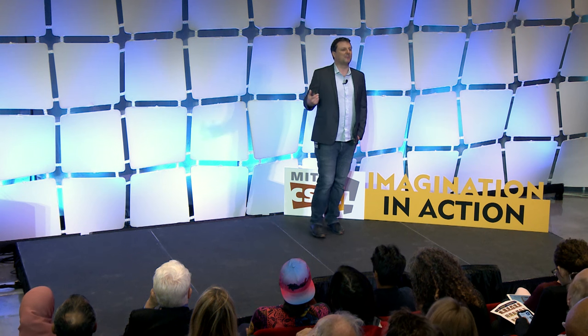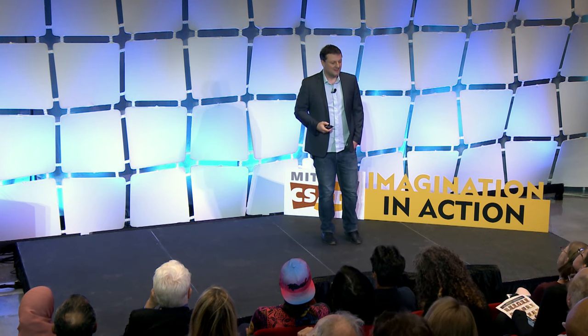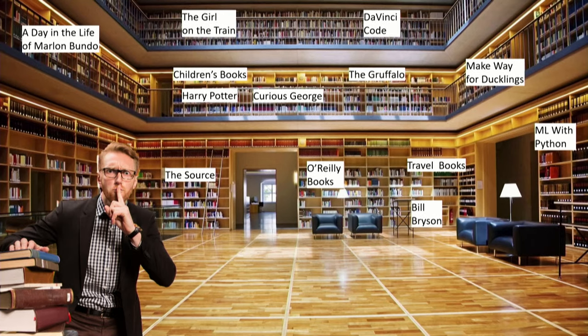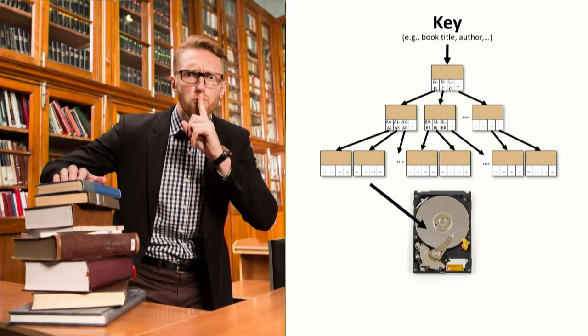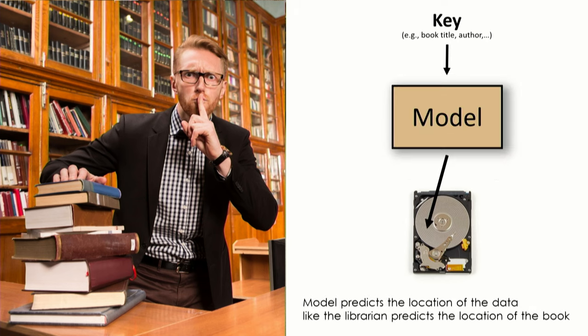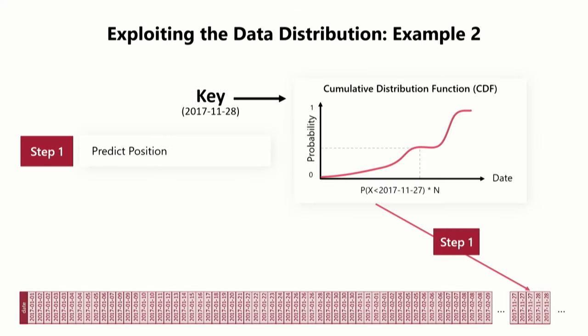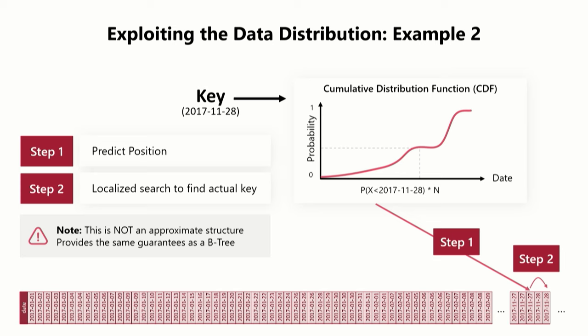However, there's an alternative approach. Instead of going through the index cards, you ask a librarian — because the librarian has a mental model of how things are distributed in the library and can point you roughly in the right direction. You then do a little localized search to find the book. This is exactly the principle we are now trying to exploit: instead of using index cards, we replace them with a model — like a librarian — which knows the rough location by approximating the CDF of the keys. The model gives you an approximate location, and then you do a localized search to find the exact record.